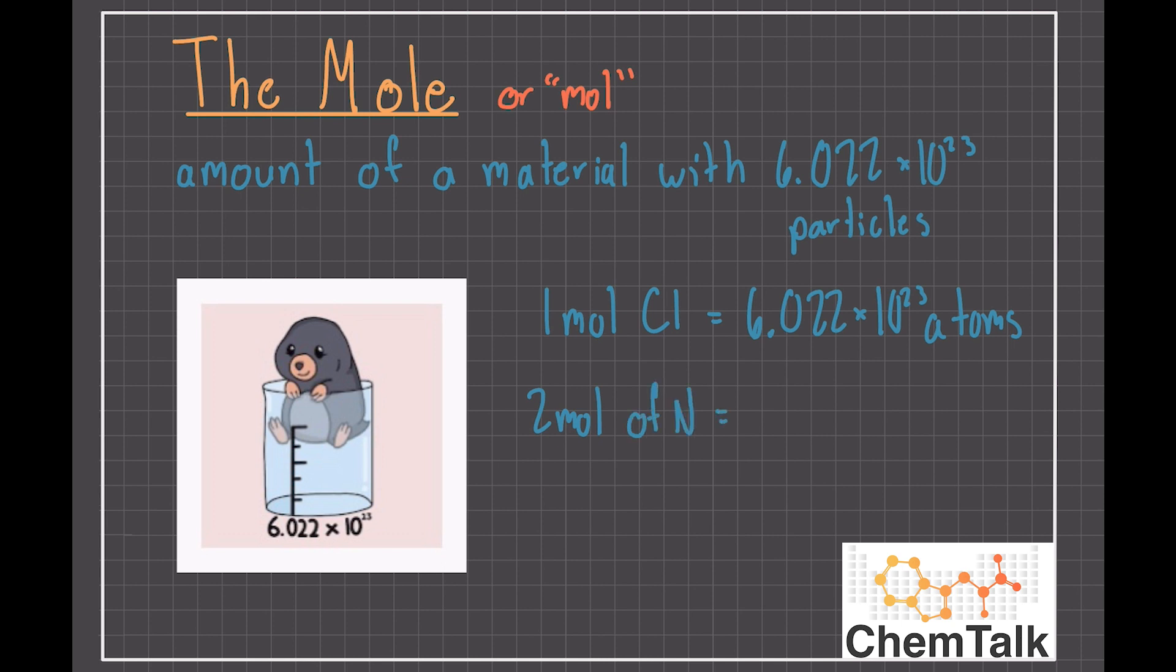When we say there are one mole of chlorine it means there are 6.022 times 10 to the 23rd atoms of chlorine. Similarly when there are two moles of nitrogen there are 12.04 times 10 to the 23rd nitrogen atoms.